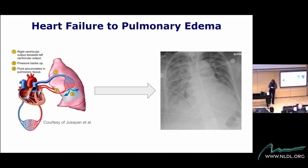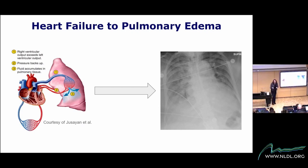Heart failure is a chronic condition. Patients often come back to the hospital, and the best hope we have is to stabilize the condition. Once in a while, there are acute events where the heart stops working properly — it's not pumping blood as it should. There is a buildup of pressure in the blood vessels, and fluid seeps from the capillaries into the air sacs in the lungs. Counterintuitively, the most direct way to observe heart failure is to take an X-ray of the lungs.